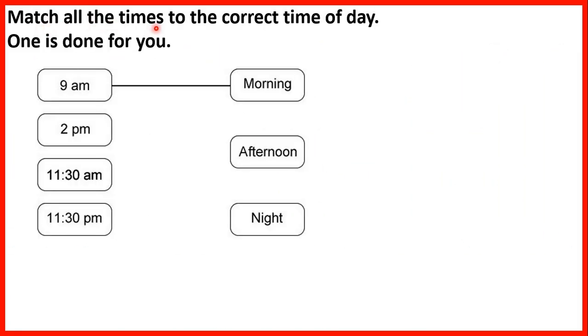Match all the times to the correct time of day. One is done for you. So 9 am is in the morning. Because remember, an am time is before midday, so before the 12 o'clock that's in the middle of the day. 2 pm is in the afternoon, because a pm time is after midday. So after 12 o'clock in the middle of the day. So 2 pm is 2 o'clock in the afternoon.